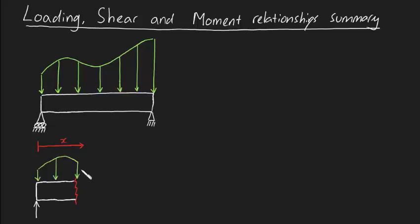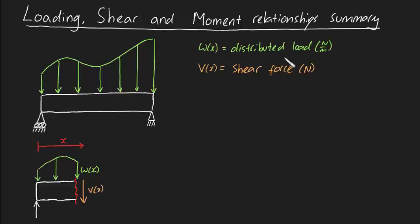w which is the distributed load at x in newtons per meter, v which is the shear force at x in newtons, and m which is the bending moment at a point x in newton meters.